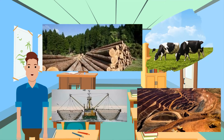The primary sector of the economy is the sector making direct use of, or exploiting, natural resources. This includes agriculture, forestry, fishing, and mining.